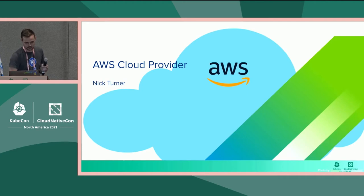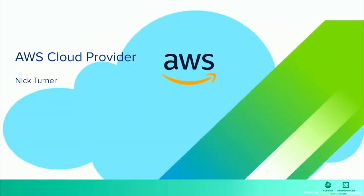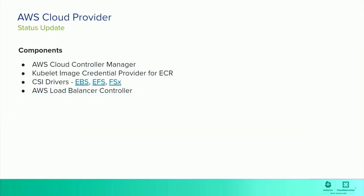Hello, my name is Nick Turner. I'm on the Amazon EKS team, and I'm going to be talking about the AWS Cloud Provider. The AWS Cloud Provider is comprised of or related to a number of components, including the AWS Cloud Controller Manager, the Kubelet Image Credential Provider, CSI Drivers — EBS, EFS, and FSx — and the AWS Load Balancer Controller.